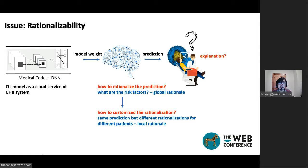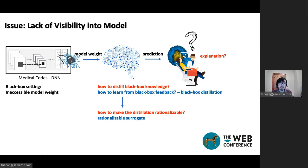So this is the first challenge, rationalizability of black-box prediction. And also related to the challenge is the issue of lacking visibility into the cloud model. And this aggravates the difficulty of addressing the first challenge. In fact, these two challenges go hand in hand.